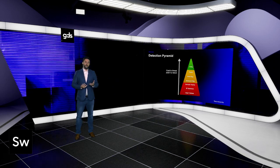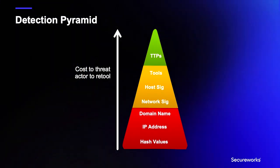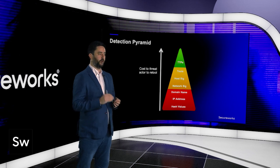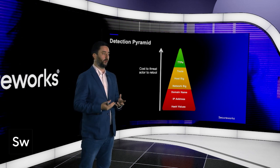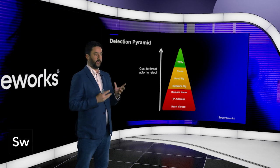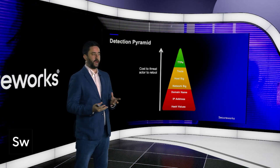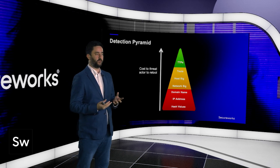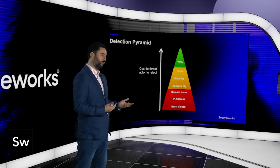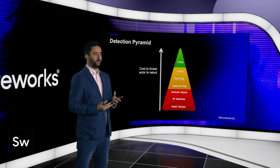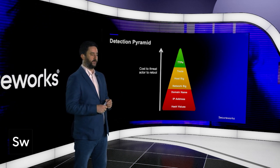If we look at this pyramid — commonly known as the pyramid of pain, some of you may have seen it before — this outlines the kinds of things we can detect in a platform like Taegis. It's designed to show the difficulty for a threat actor to evade detection. The higher up this pyramid you go, the more effective and longer-lasting your detections are. The green part is what we use tactic graphs for; the yellow part is where we use endpoints and network signatures.